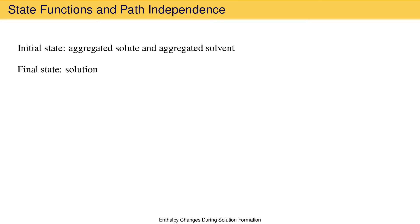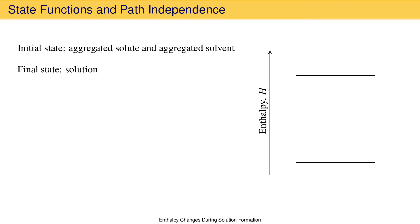We can show this single step change on what is called an enthalpy diagram. This type of diagram shows enthalpy increasing along the vertical axis and has horizontal lines to indicate the enthalpy of states of the system, such as the initial state and the final state. Changes in enthalpy are indicated with an arrow drawn from the initial state to the final state. This arrow is the enthalpy change associated with solution formation and so it is the heat of solution. It is positive because it goes up, indicating that the enthalpy of the final state is larger than the enthalpy of the initial state. This enthalpy diagram therefore shows an endothermic solution process.